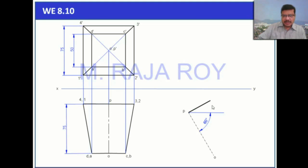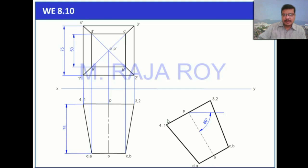On that perpendicular you are going to get points 3 and 2. Take this length with the compass and mark it here — after marking, you get point 3 2. On the other direction you get 4 1. Similarly, take the distance and mark cb here; on the other side you get da. Join these points — the same top view is now reconstructed at an angle of 60 degrees. When seeing from the front, this base is visible and this base is invisible.